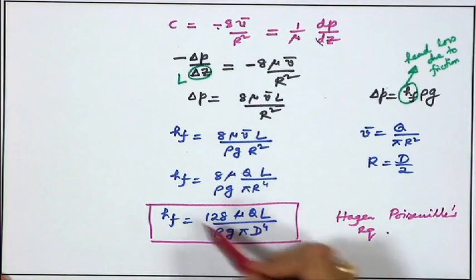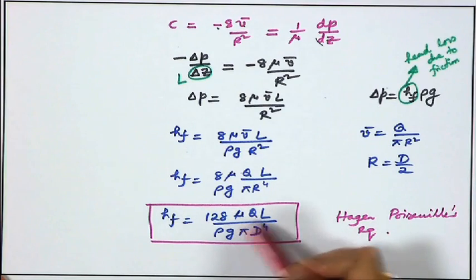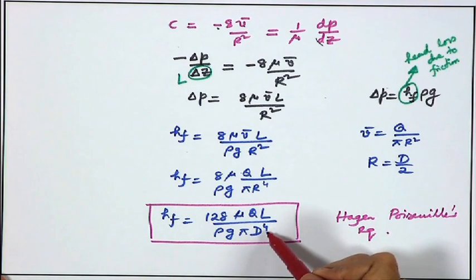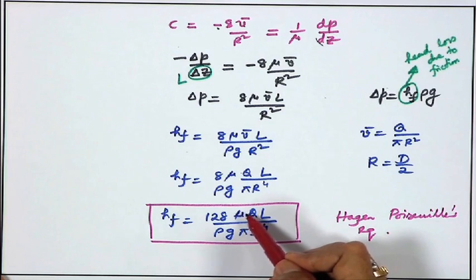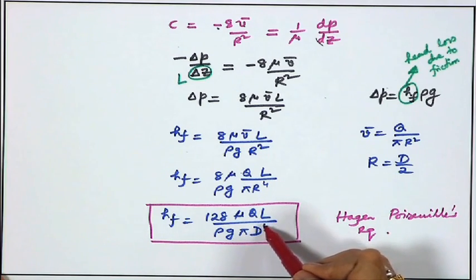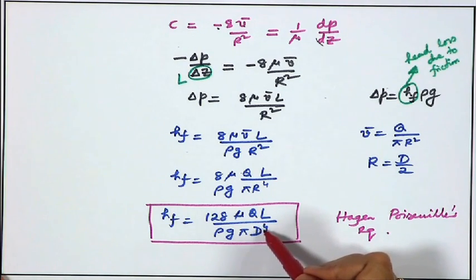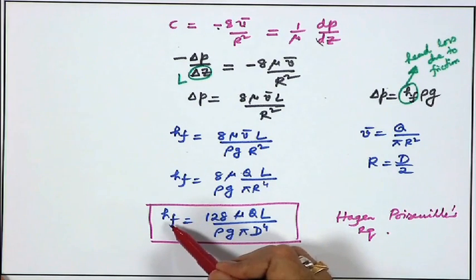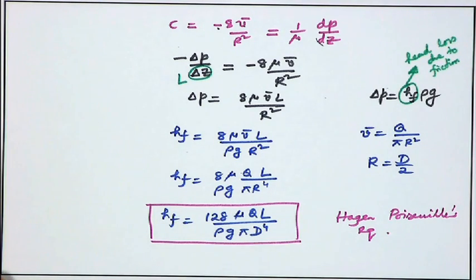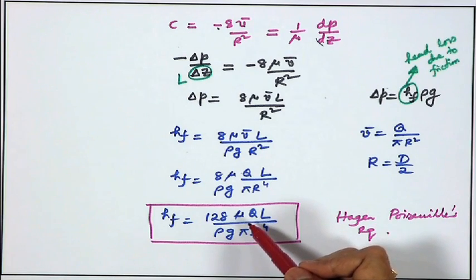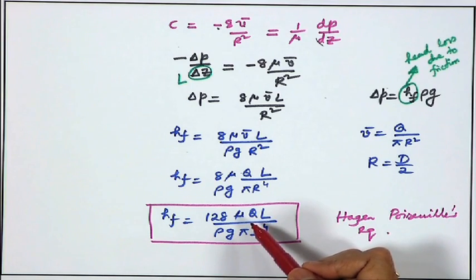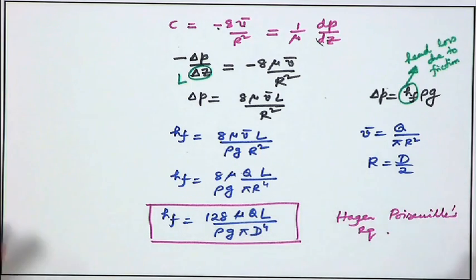The head loss is inversely proportional to the fourth power of diameter and linearly proportional to μ, Q, and L. If you make D smaller and smaller, h_f becomes larger and larger. To maintain the same flow rate Q, you require huge pumping power to drive flow through a very narrow channel. This is one of the great challenges in driving flow through micro channels and nano channels, which is itself a very interesting topic.